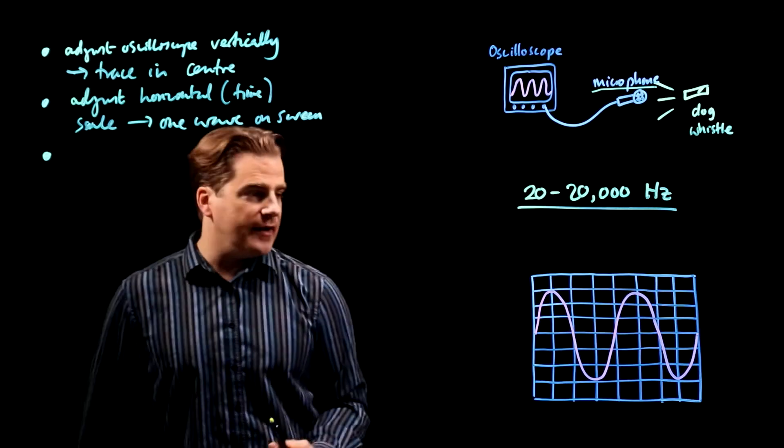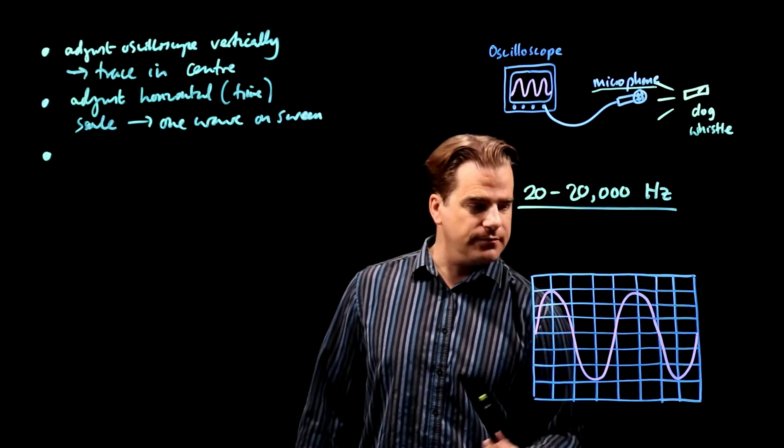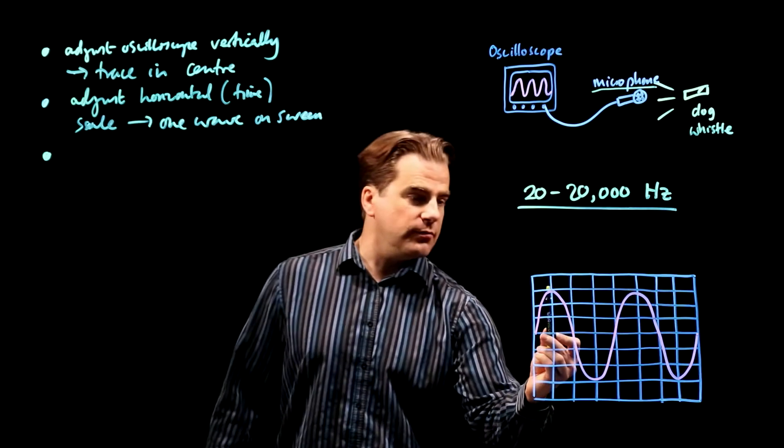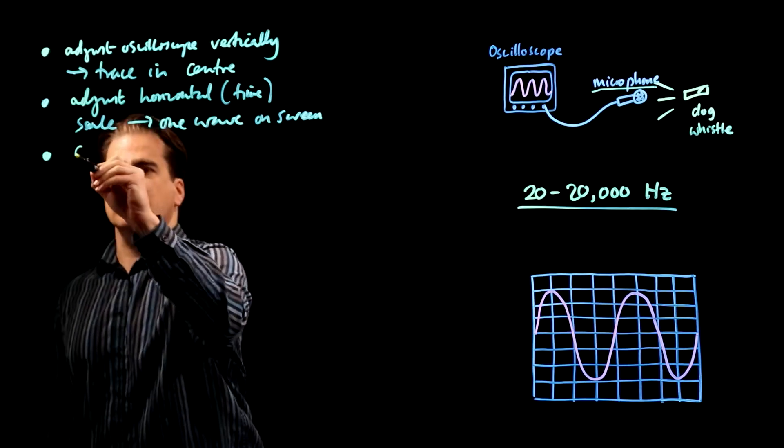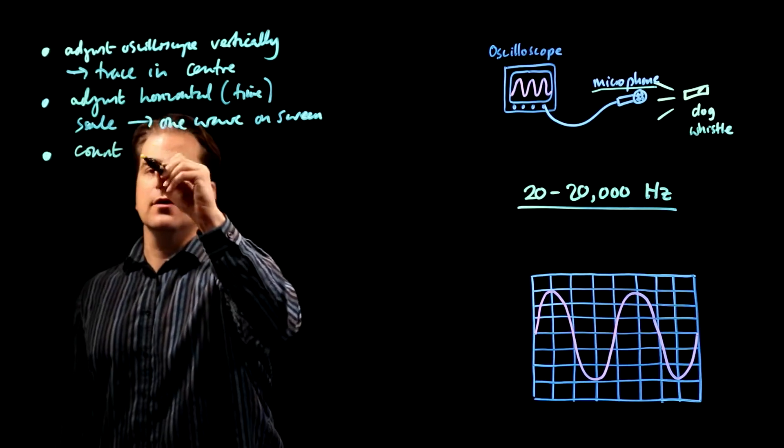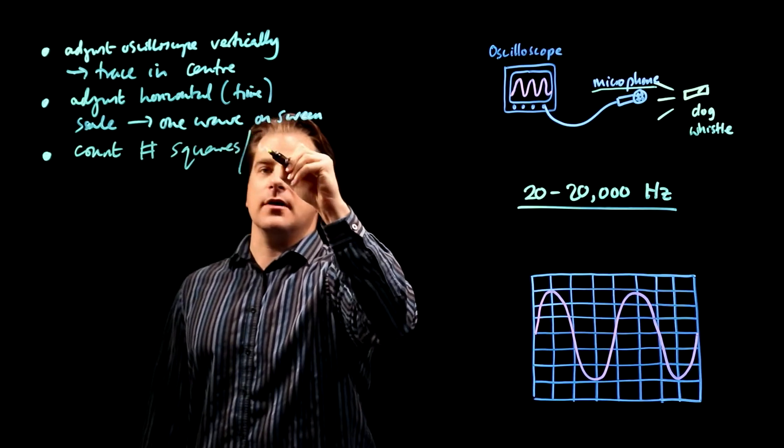Count the number of squares per wave. In this case it would be one, two, three, four. Count number of squares per wave.